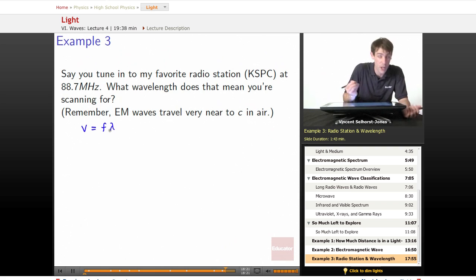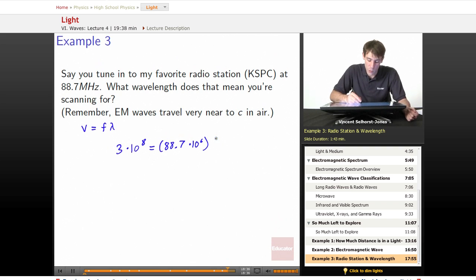Frequency times wavelength. Well, the velocity we're dealing with for electromagnetic waves is 3 times 10 to the eighth equals whatever frequency it is. So in this case, 88.7 MHz, 88.7 times 10 to the sixth hertz, because it's mega, times the wavelength.